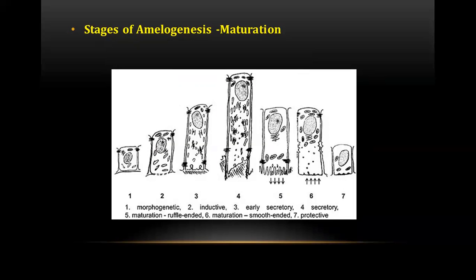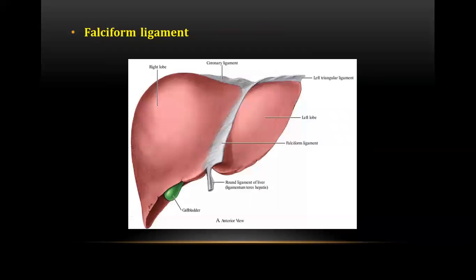The next question was about the stages of amelogenesis, specifically the ruffle-ended maturation stage shown in the examination. In the diagram: figure A depicts the morphogenetic stage; two is the inductive stage; three is the early secretory stage; four is the secretory stage; five represents the maturation ruffle-ended stage; six is the maturation smooth-ended stage; and seven is the protective stage.